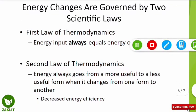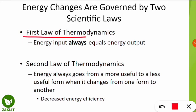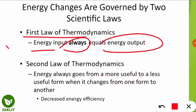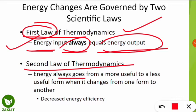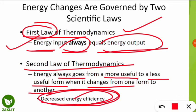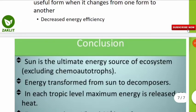Scientific laws are mostly governed by these two laws. The first law of thermodynamics states that energy input always equals energy output. The second law states that energy always goes from a more useful to a less useful form when it changes from one form to another — meaning energy efficiency decreases as it moves from one trophic level to another.